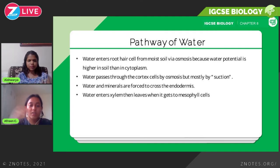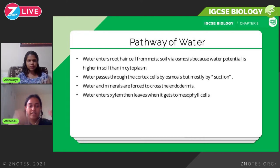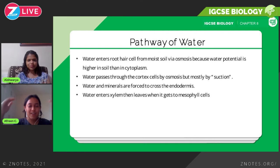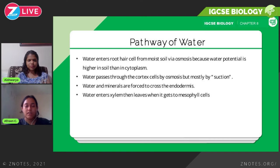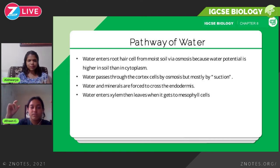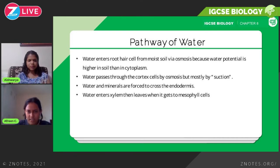Water enters the xylem and then gets to the mesophyll cells. The final destination in the plant is the leaf — it goes from the root cell along the stems and along the veins of the leaf to reach the leaf cells, where respiration and photosynthesis can occur. That's really the purpose for the water.